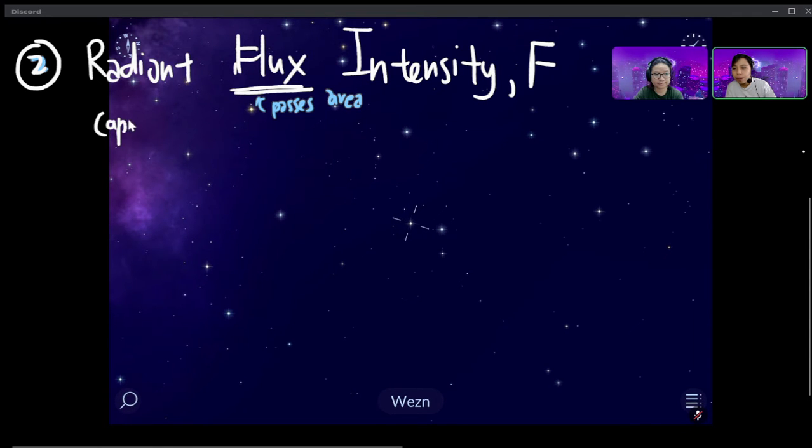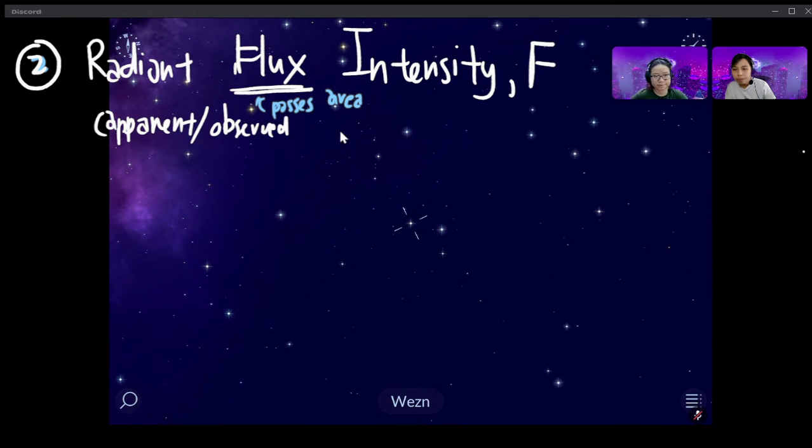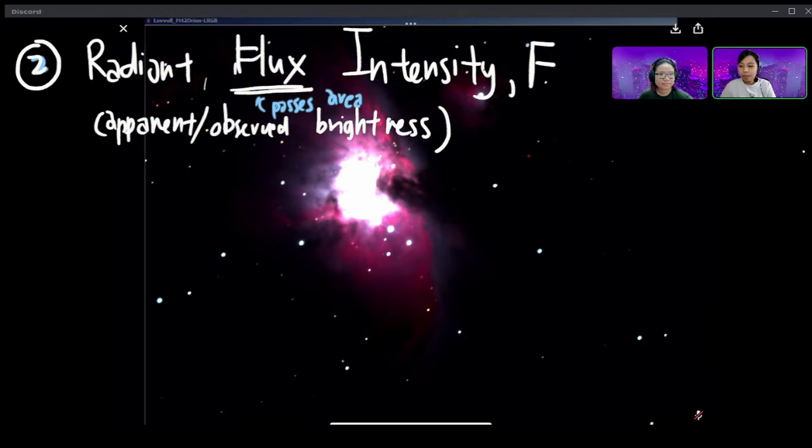This one, we can also call this flux idea as the apparent or observed brightness. That depends on how far away you are. So here's an example of a zoom-in picture of the Orion Nebula. I got a chance to learn how to take a picture like this when I was in uni. So how does this flux thing work?